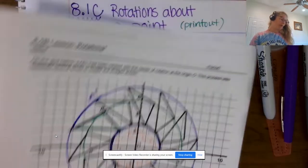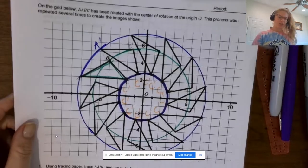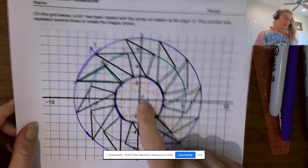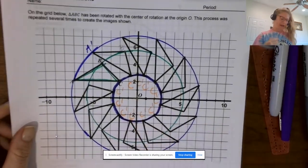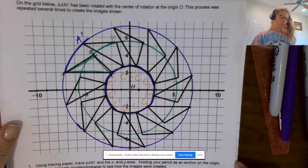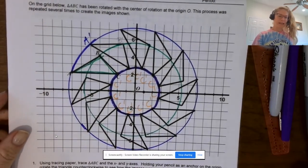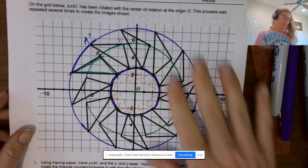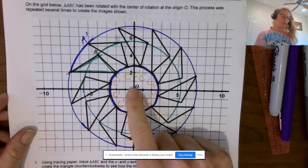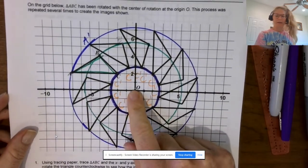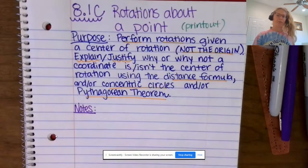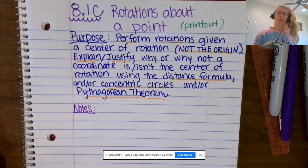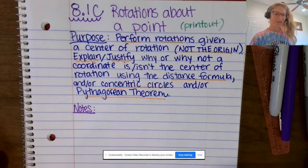With 8.1b, we always rotated about the origin, so we had certain rules when rotating. Today we're going to be looking at rotating about just a point — our purpose is to perform rotations given a center of rotation, not necessarily the origin.